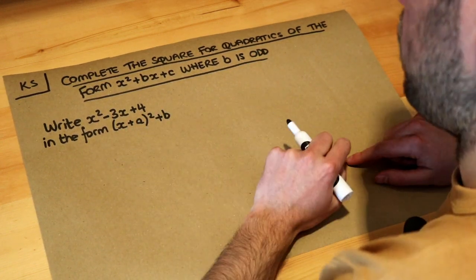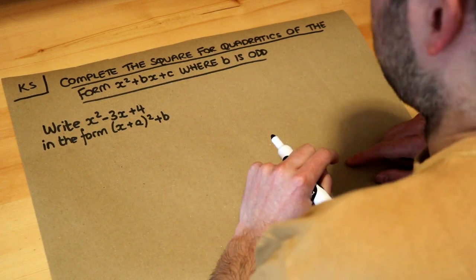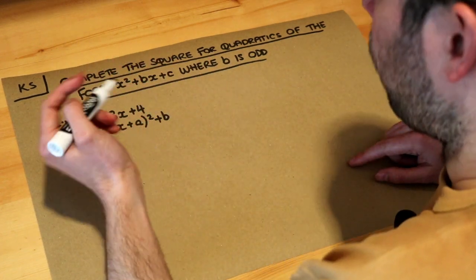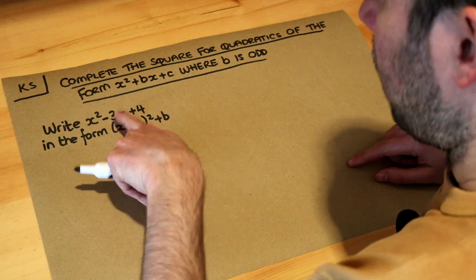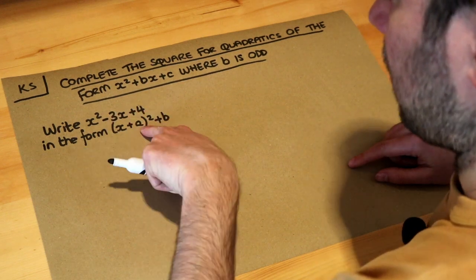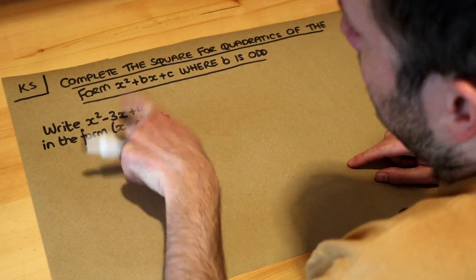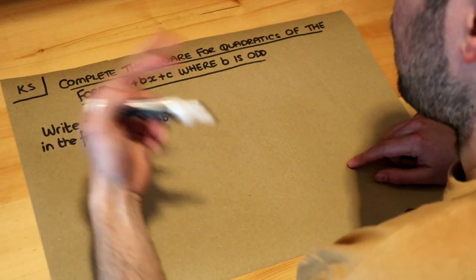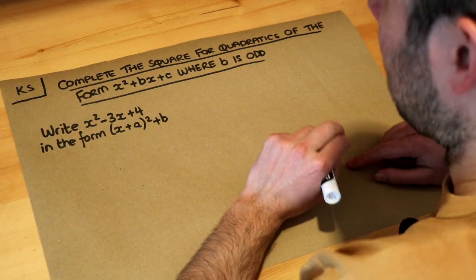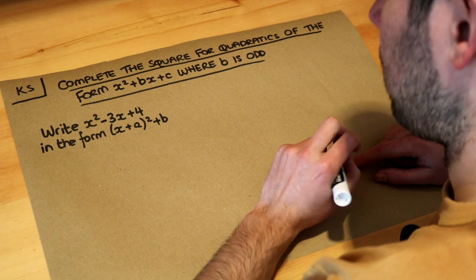So that's the completed square form. There's nothing different in this video other than it's going to be slightly more awkward because you might remember that we halve the number in front of the x to get it in this form, but we're halving an odd number so we're going to have fractions. The method is exactly the same, it's just going to be slightly more awkward because of the numbers involved.